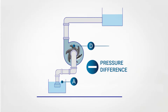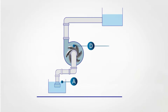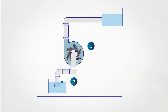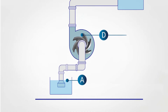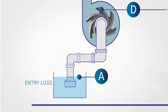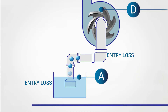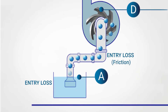Thanks to this pressure difference, the water is sucked into the pipe and flows from the lower reservoir up to the pump. To explain how the water then flows from the pump to the upper reservoir via the rotary motion of the inner impeller, I will use the Bernoulli equation. When water is sucked in, there is an entry loss — a pressure decrease as water enters the suction pipe — and a further pressure decrease due to friction with the inner surface of the pipe.